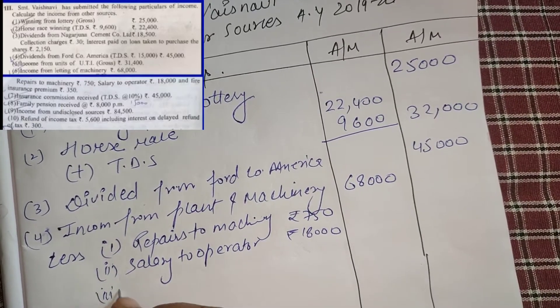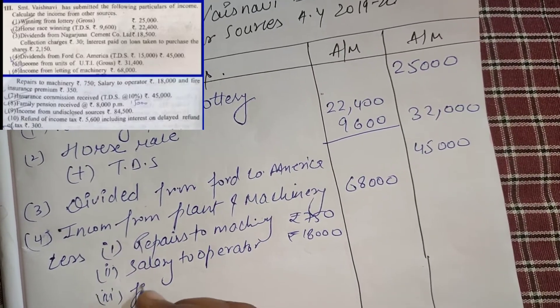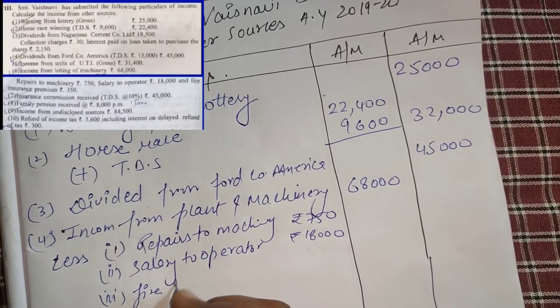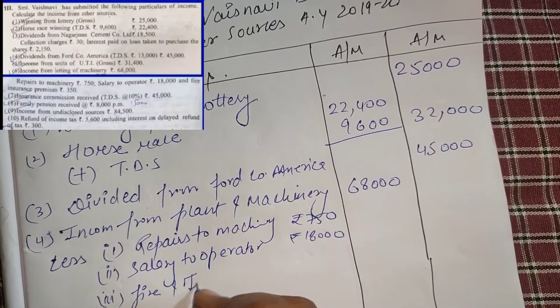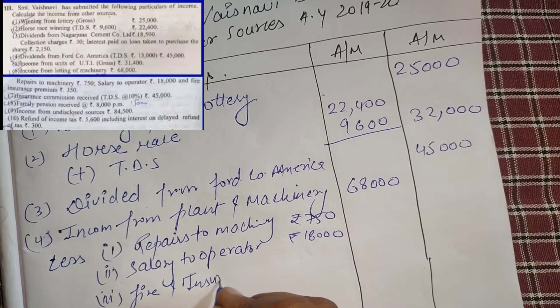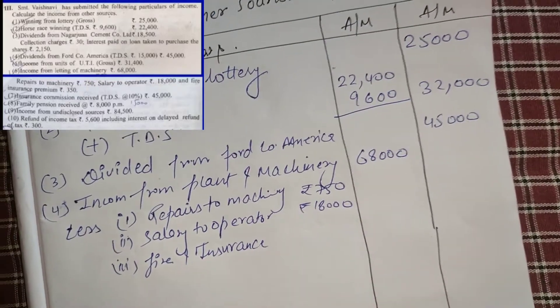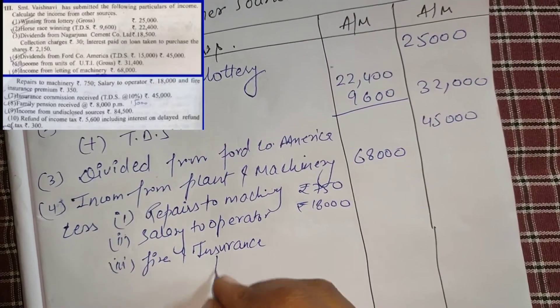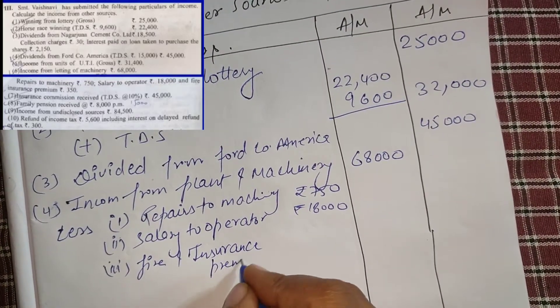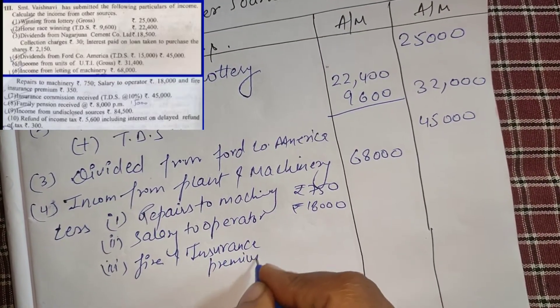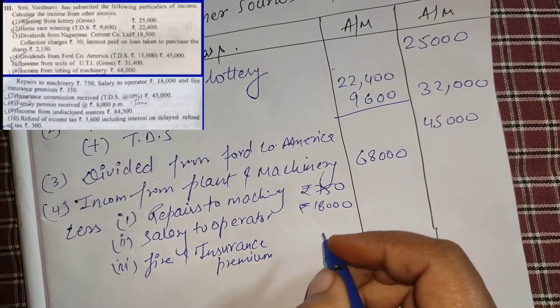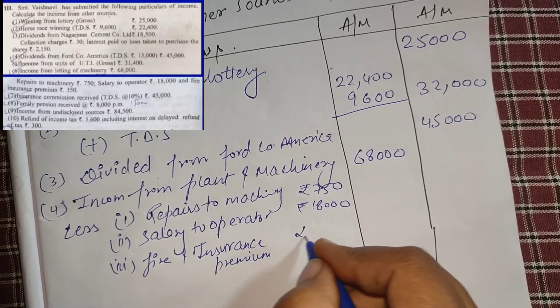Next, fire insurance premium — this will also be deducted. We will deduct it. We have given 3,500.